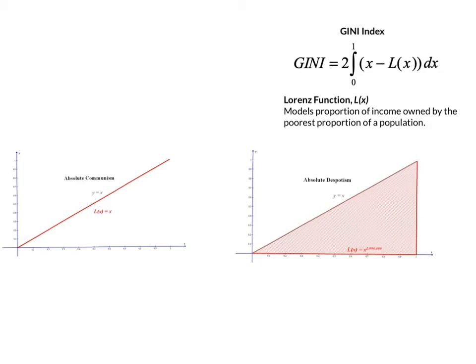So the most extreme case, on the one end, is when everyone receives exactly the same amount of the wealth in the nation, which this would be perfect communism, which really doesn't happen anywhere, if you think about it. But in that case, in absolute communism, the Lorenz function would be y equals x. And that means that the area between x and the Lorenz function ends up being 0.